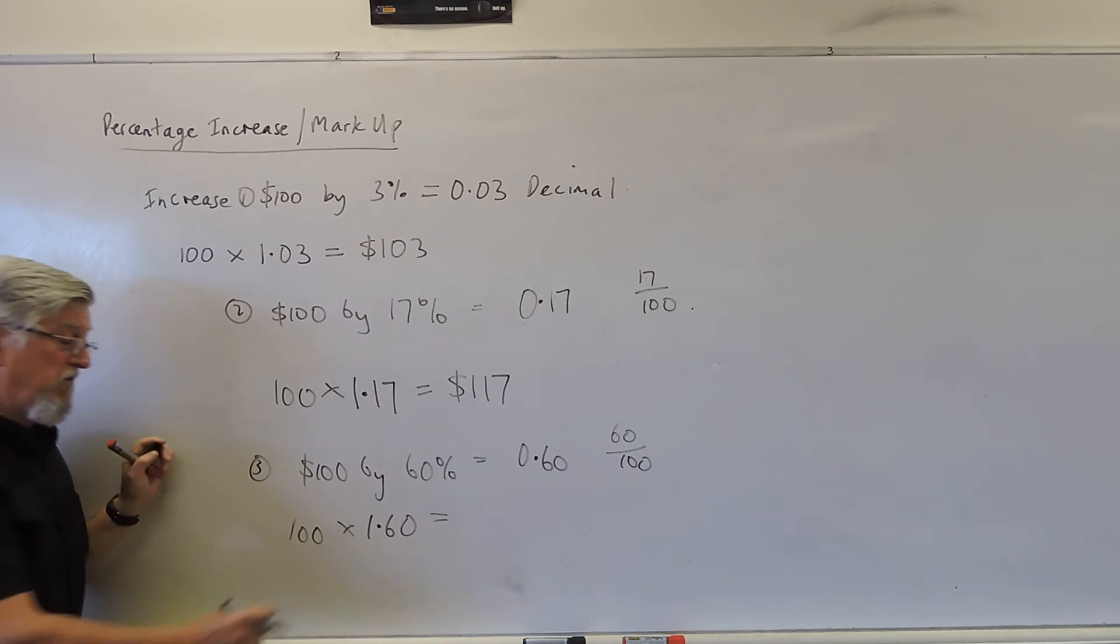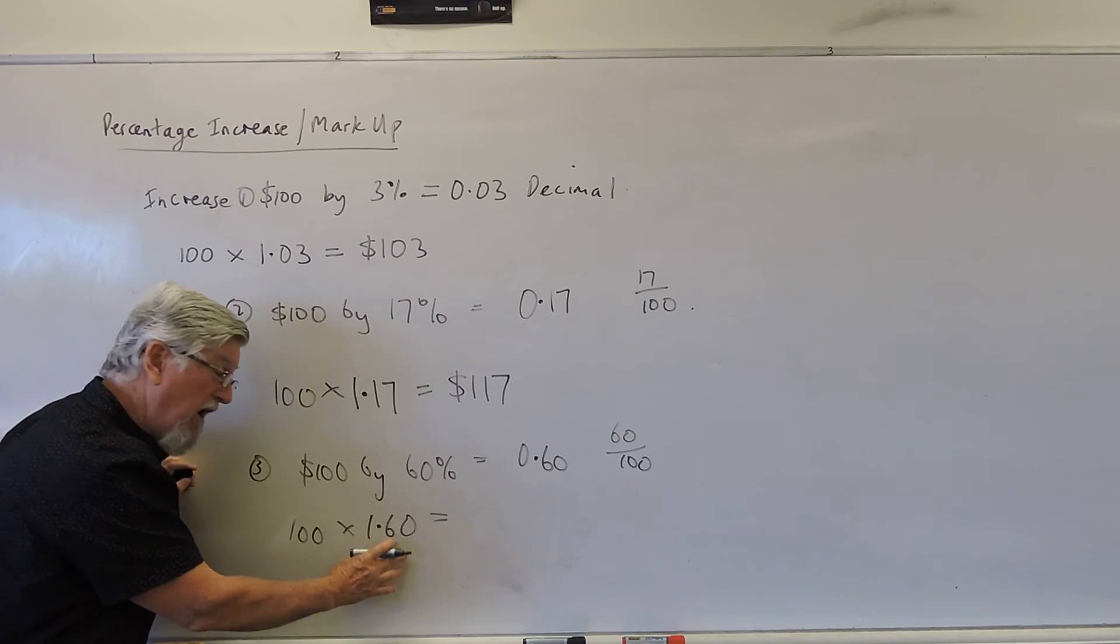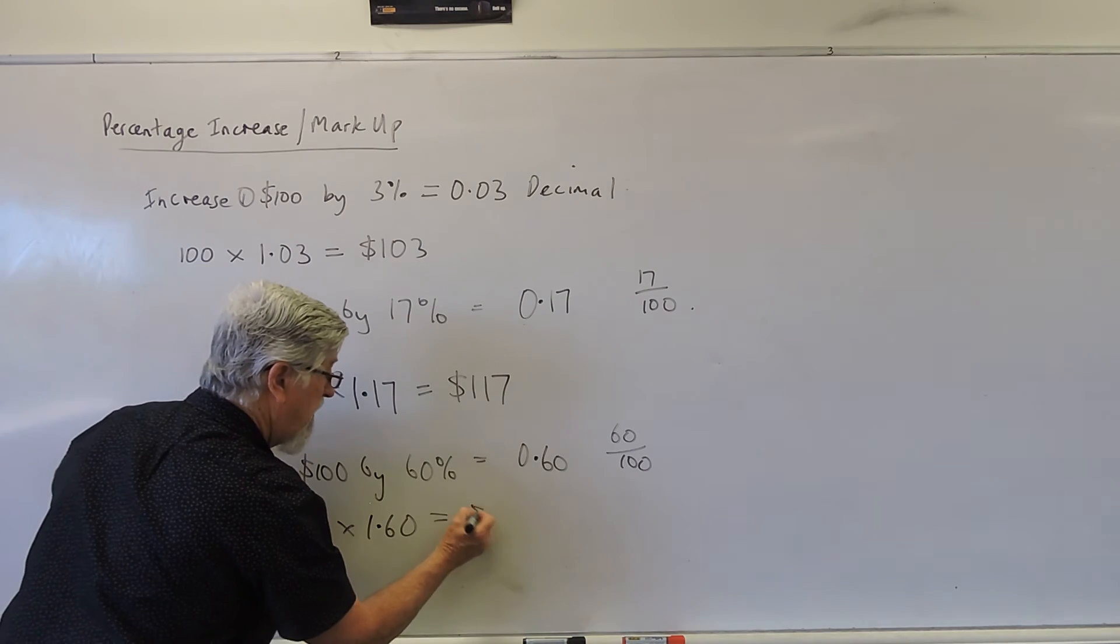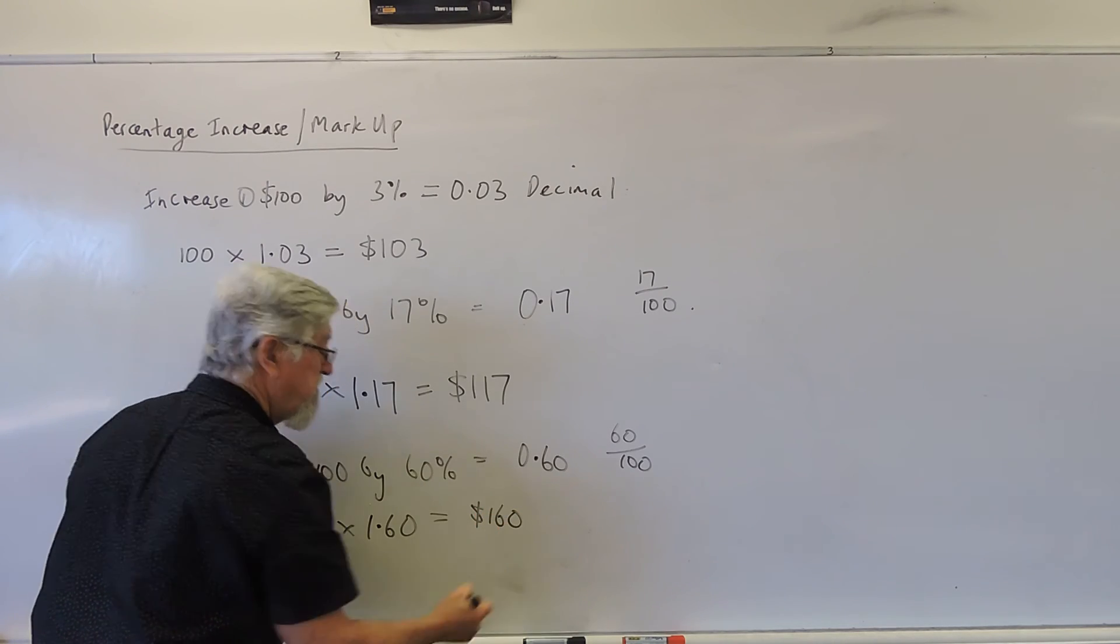That means a 0, you can just go 1.6. But if your brain thinks of 60%, that's 0.60. That's what it is to pop it in your calculator. We end up with $160.